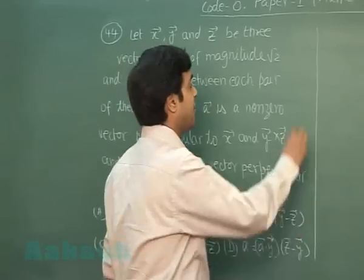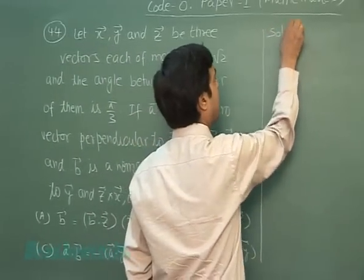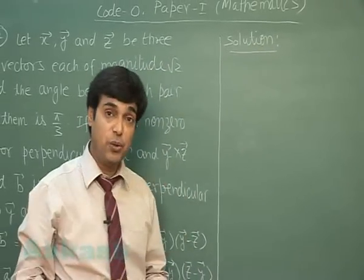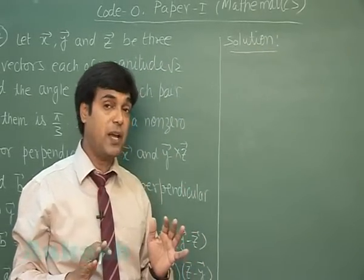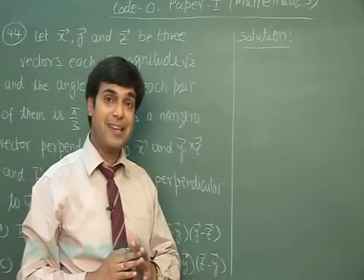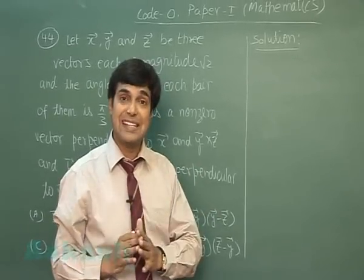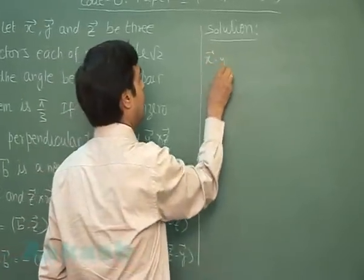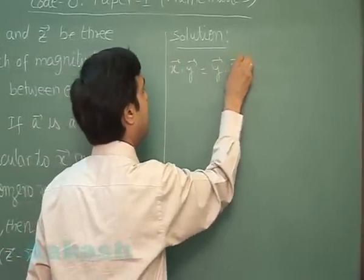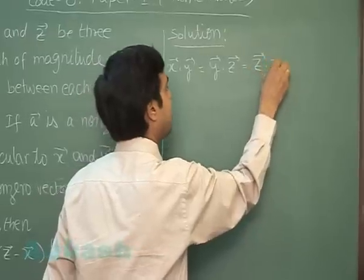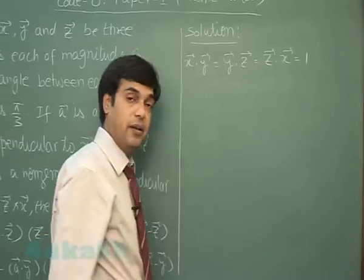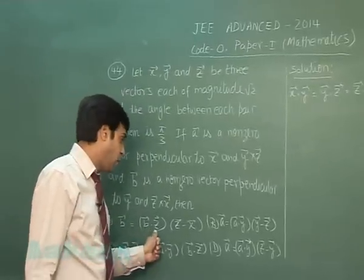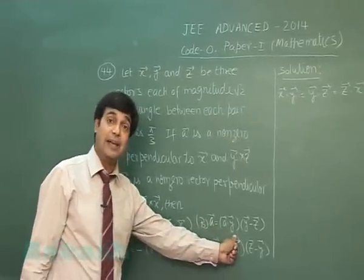So it is given to me that x, y, z are of same magnitude and angle between each pair is π/3, means x·y = |x||y|cos 60°, that comes 1. Similarly, y·z, z·x all are 1. Fine?